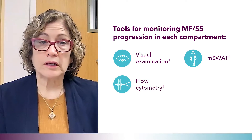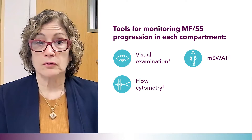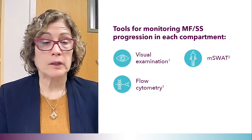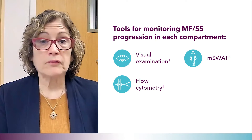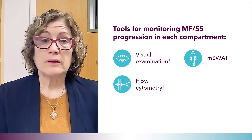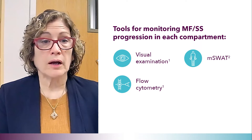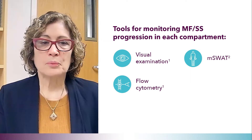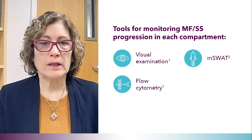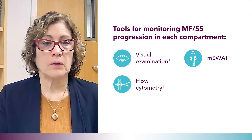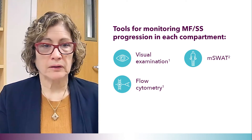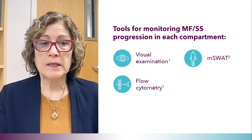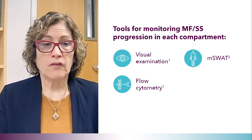Flow cytometry is what we most often use for measuring Sézary cells or circulating tumor cells. You can look at the total number of circulating cells by following the white blood cell count as well as the absolute lymphocyte count, and compare flow cytometry results over time to see if there was an increase or decrease in overall disease burden. Patients with more advanced mycosis fungoides and certainly those with Sézary syndrome require a higher level of care because they are more susceptible to infections and need to be carefully screened for involvement of other organs.